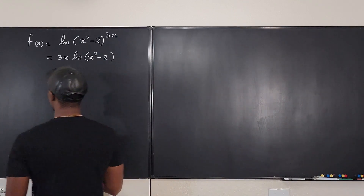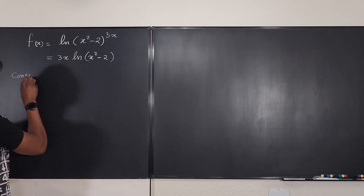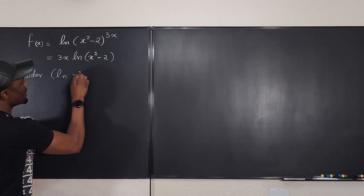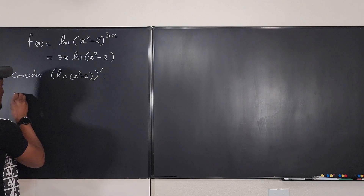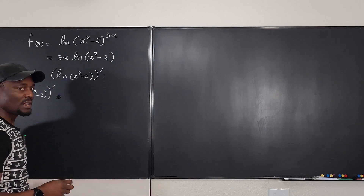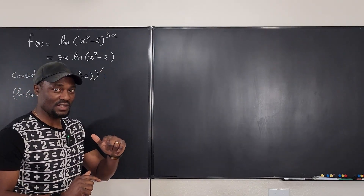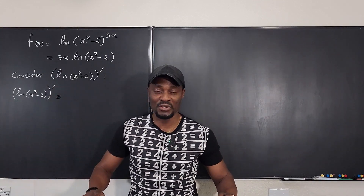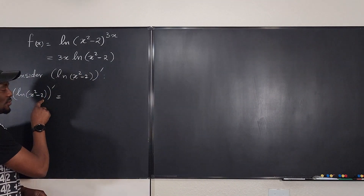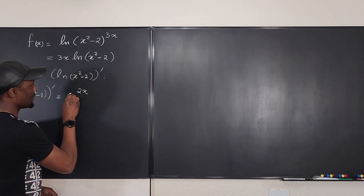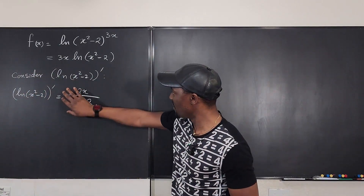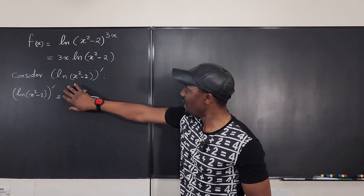The first thing we do is consider the derivative of ln(x² - 2). The derivative of ln(x² - 2) is the derivative of the argument over the argument. The argument is x² - 2, its derivative is 2x, so the result is 2x over (x² - 2). This is now a rational expression.